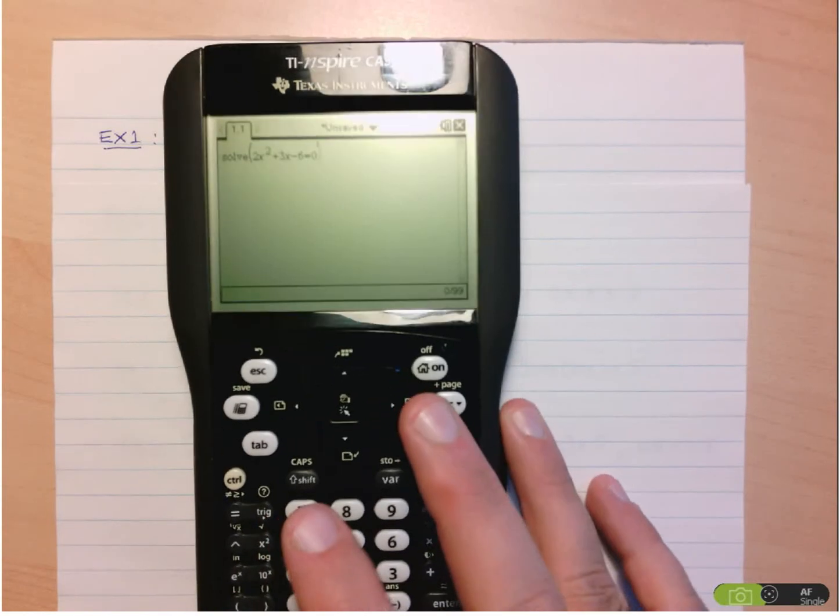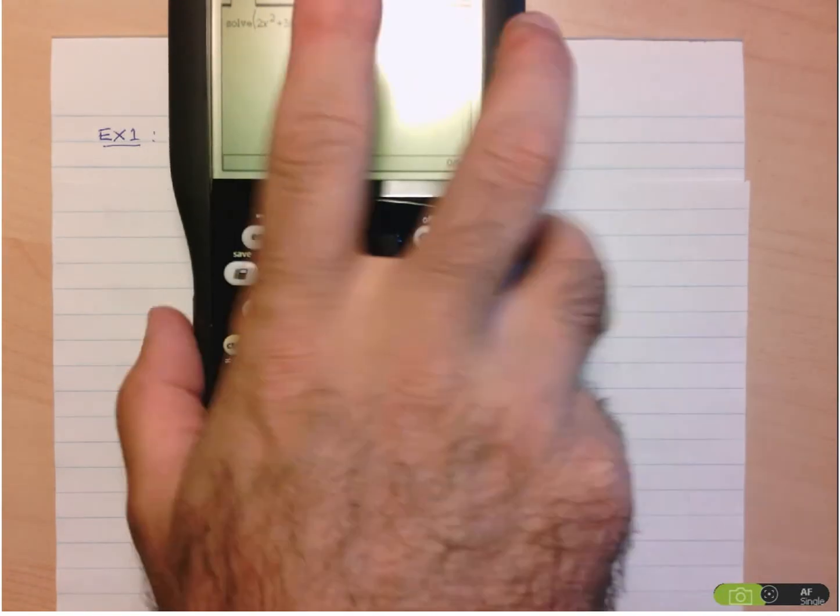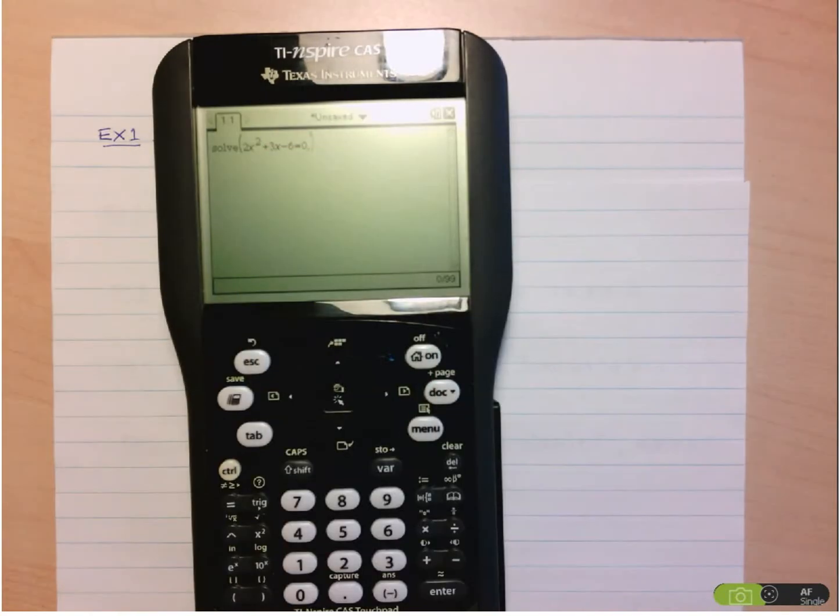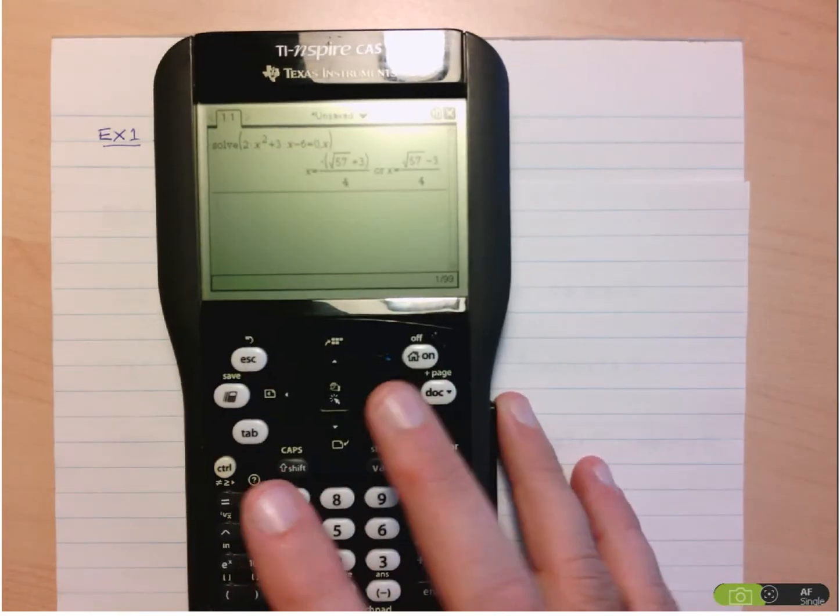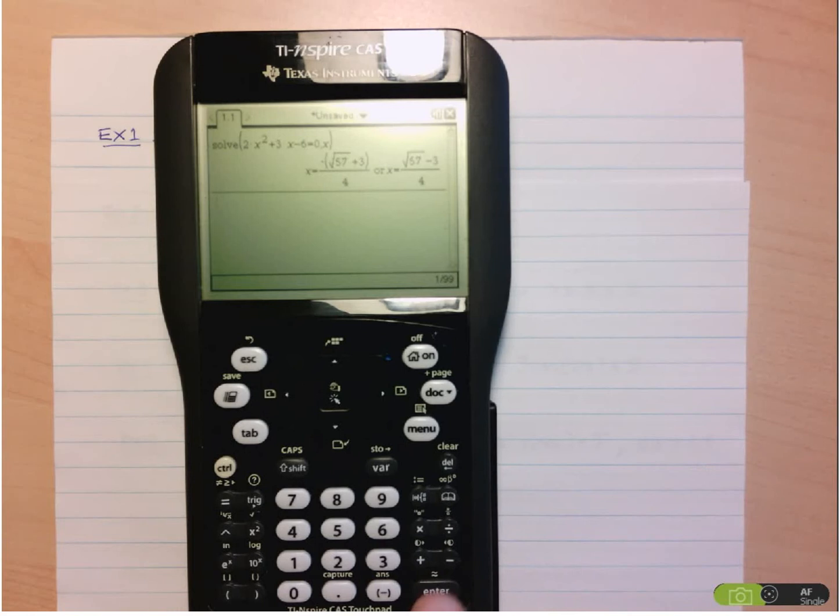So let's put in 2x squared plus 3x minus 6 equals 0. And what it's also waiting for is the variable. So I just use comma, which the comma button is at the very bottom corner. X, and then you just press enter, and it gives you your answers. Now it always defaults to the exact answer, but if you notice above the enter sign here, you've got the approximation sign, so you can just press control enter, and that'll give you the approximated answers.